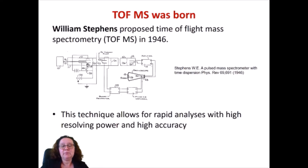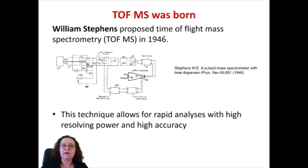Those early pioneers laid the groundwork, and in the mid-40s new improved equipment was developed. Stephens proposed the first spectrometer based on a technique called time of flight — TOF-MS, time of flight mass spectrometry. This is an improved mass spectrometry technique that allows for very rapid analysis and has a high resolution and high accuracy.